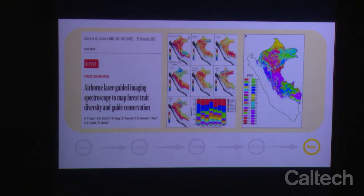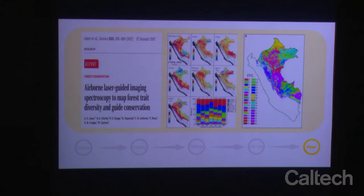Greg Asner is by far and away the person who has used this most effectively, with his imaging over Peru, where he grouped different functional classes based on the different traits he had measured. He was basically able to identify these functional types throughout Peru — using some extrapolation with other data sources — and then used GIS analyses to identify places where functional combinations occurred but there wasn't any protected part of the landscape. That became a basis for establishing new reserves in Peru based on their functional variations. This is a really effective use, and the sort of thing we'll be able to apply practically.